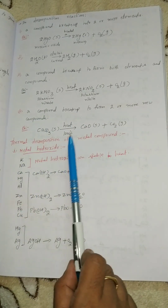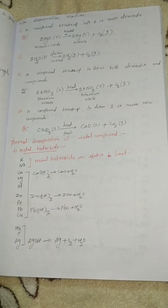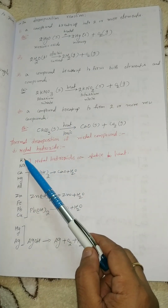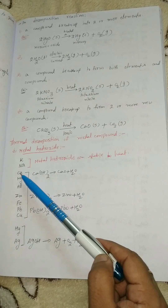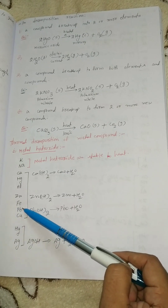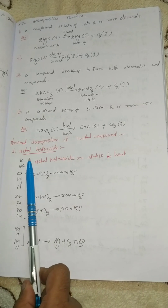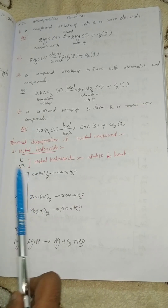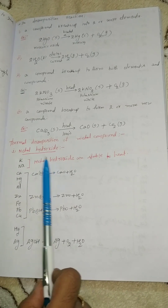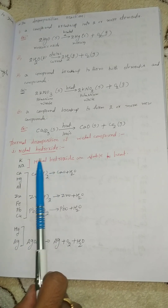Thermal decomposition of metal compounds. First, metal hydroxides — hydroxide means OH. The metals listed are potassium, sodium, calcium, magnesium, aluminium, zinc, iron, lead, copper, mercury, and argentum. Potassium and sodium hydroxides are stable to heat — these 2 are not changed in a chemical reaction while heating. For calcium, magnesium, and aluminium, the hydroxide Ca(OH)2 decomposes into CaO plus water — water is mainly formed from these 3 elements.